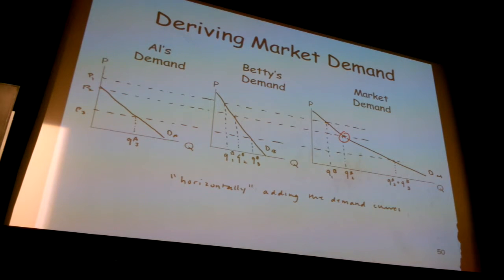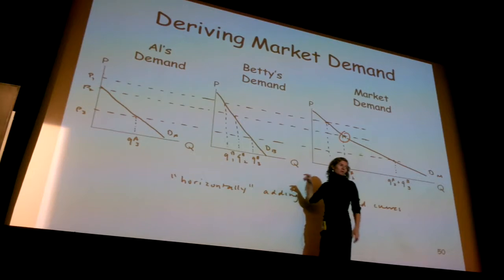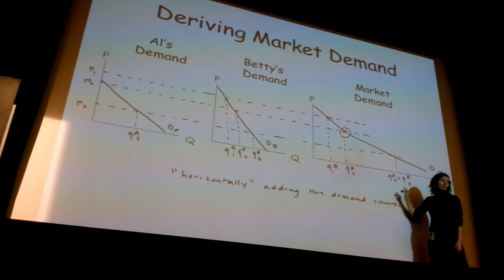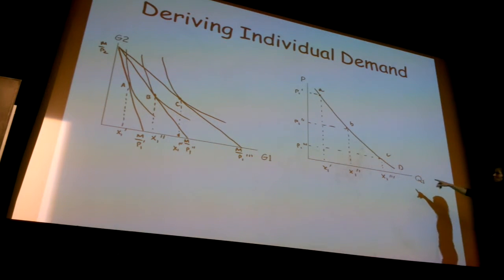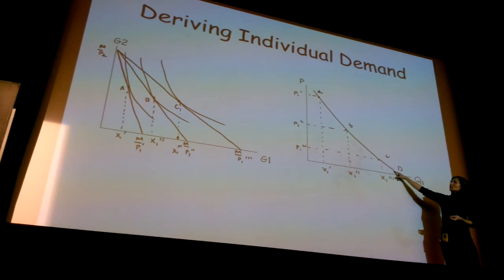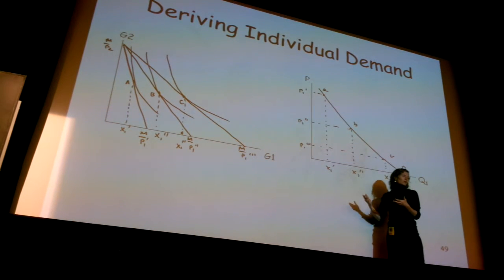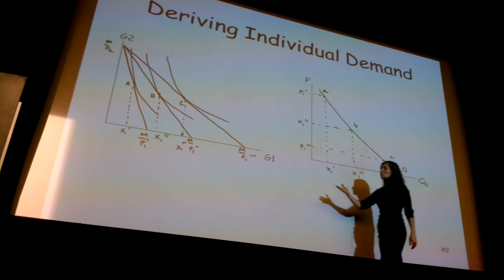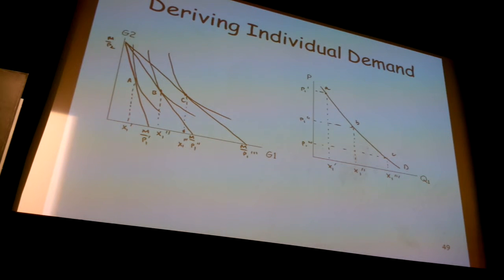These don't have to be linear. Al's demand curve doesn't have to be a straight line, Betty's demand curve doesn't have to be a straight line, and as a consequence the market demand curve doesn't have to be a straight line either. They have to be downward sloping, but they don't have to be straight lines. Going back to this derivation, when I connected the dots my line really isn't exactly straight, and there's no reason for it to be. I tend to draw things linearly because it's easier to draw the pictures, but there's no reason for a linear relationship. Demand curves do not have to be straight lines for individuals, and they don't have to be straight lines for the market.